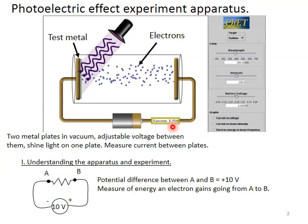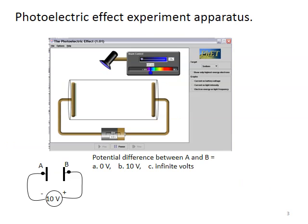So let's understand the apparatus in the experiment. Basically we have a resistor and points A and B and a potential, a battery here, and the potential difference between A and B is 10 volts, and it measures the energy an electron gains going from point A to B.